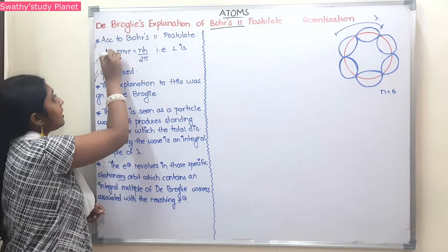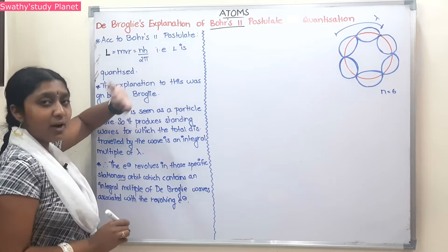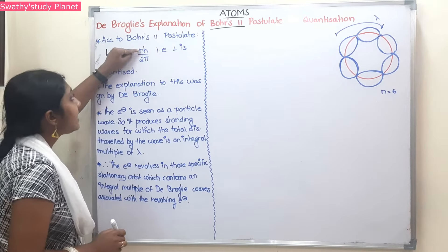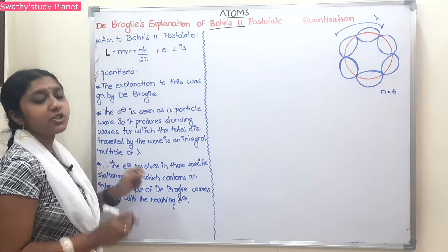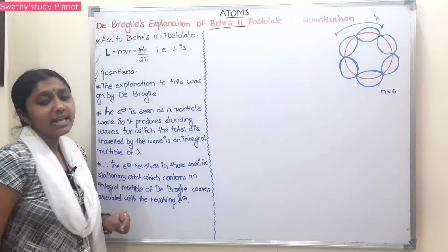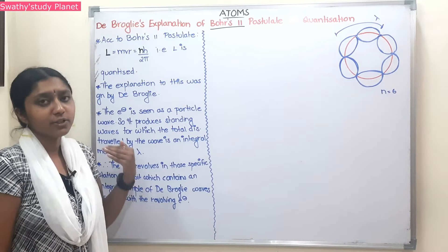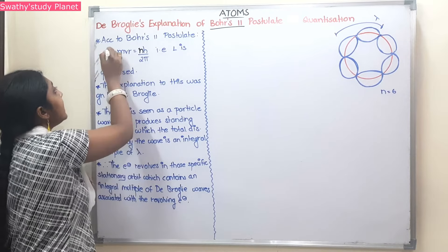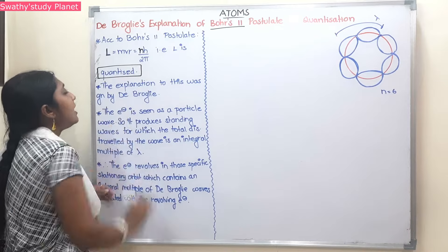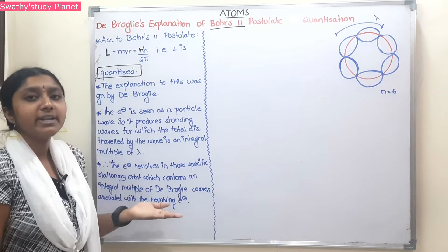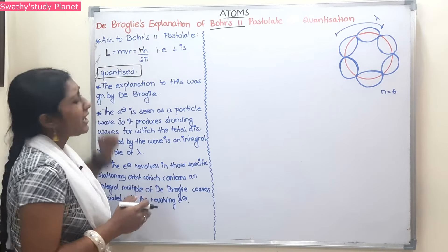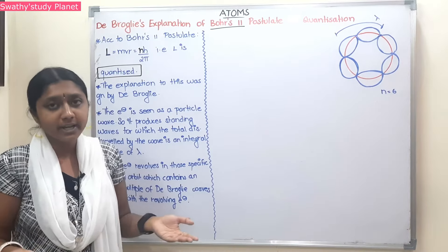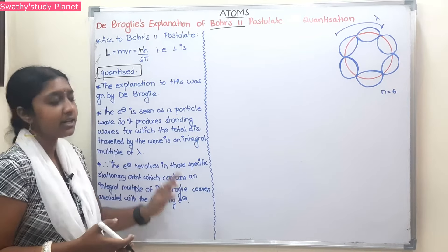So the name is spelled de Broglie. This is de Broglie's Second Postulate. Let's go through this. What is the explanation? According to de Broglie's hypothesis, there is a particle that moves in a wave.